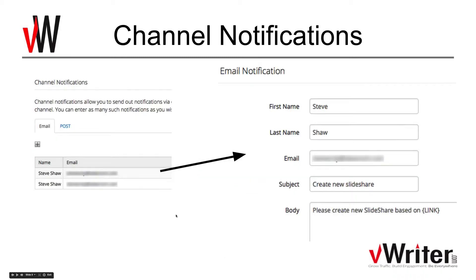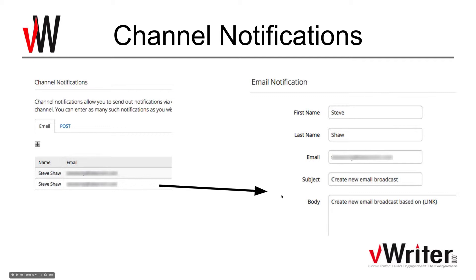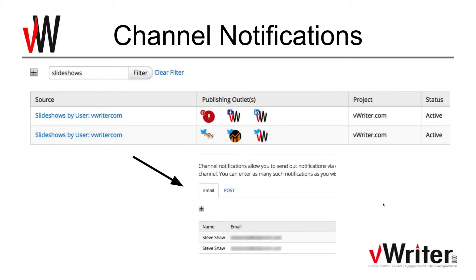The second channel notification asks whoever you've designated to create a new email broadcast, again using the link placeholder in the body. That link gets swapped out with the link to the actual blog post so the person concerned can see exactly what post they're basing the email broadcast on - so they know what to do.